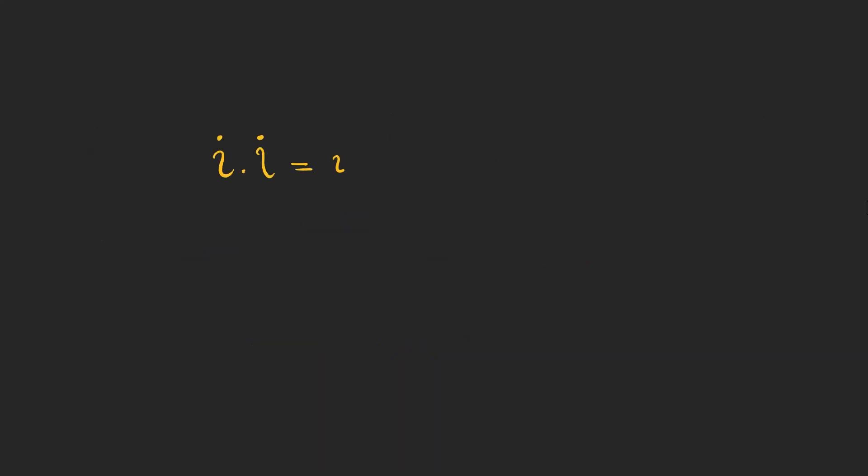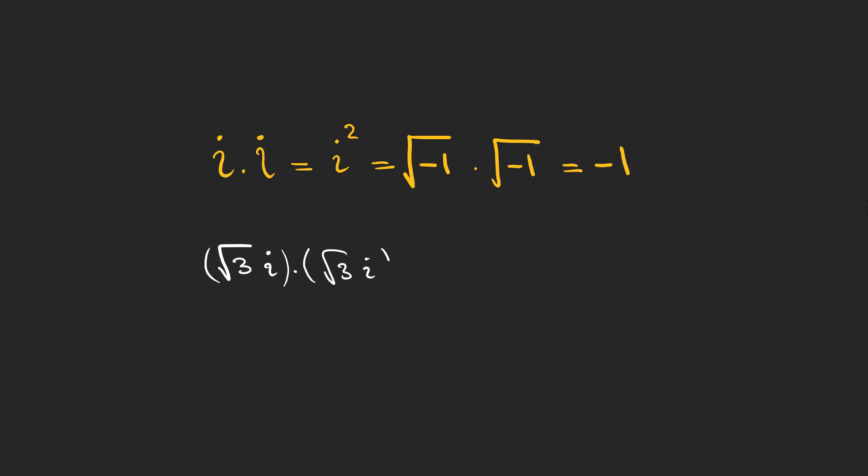Now let's get to multiplication. We have i multiplied by i, which is i squared, or the square root of minus one multiplied by the square root of minus one, which equals minus one. For example, if we multiply two imaginary numbers we get a real number, because i squared is minus one.